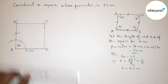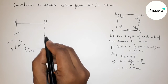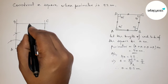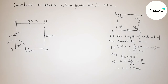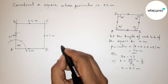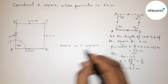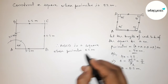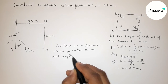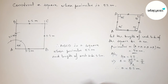Mark point C and point D. Join line BC, then join line CD to complete the square ABCD. All sides AB, BC, CD, and DA are each 5.5 centimeters. Therefore, ABCD is a square whose perimeter equals 22 centimeters and each side equals 5.5 centimeters.